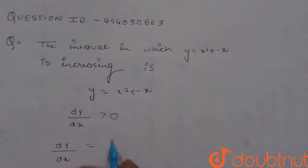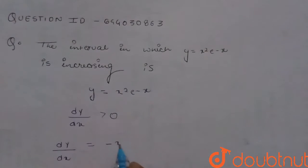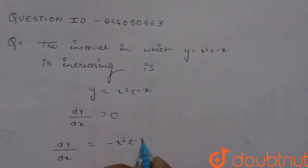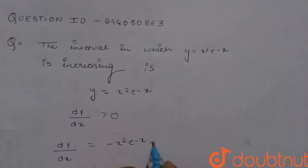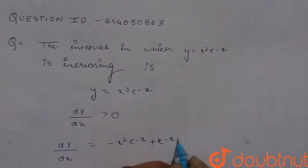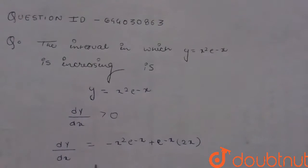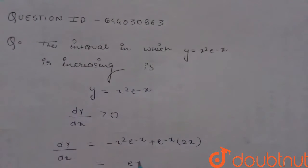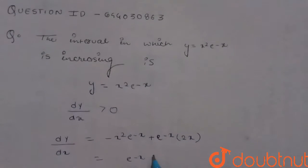x squared into e raised to the power minus x plus e raised to the power minus x into 2x. Now e raised to the power minus x will be taken as common and it becomes 2x minus x squared.